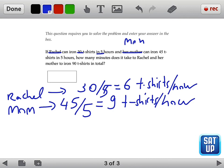Now these are individual rates. The question is asking for the time required when Rachel and her mom work together. So we remember that Rachel was doing 6 t-shirts every hour. So if they work together,